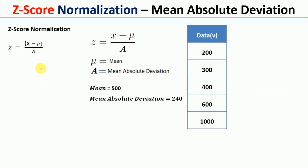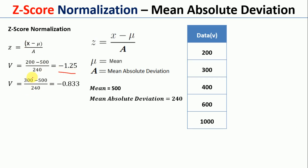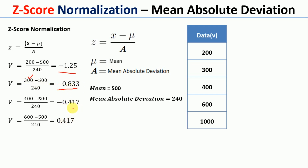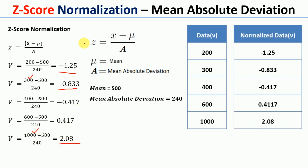Once we have the mean and mean absolute deviation, we put these values into the equation z = (x - μ) / a. In the first iteration, x = 200, so (200 - 500) / 240 gives -1.25. The second iteration, x = 300, gives -0.833. The next is -0.417, then 0.417, and finally 2.08 for 1000. This is how we apply z-score normalization with mean and mean absolute deviation.